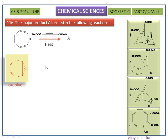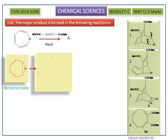This diene reacts with dimethyl butynedioate. It will give a [4+2] Diels-Alder adduct under thermal conditions. This is the benzene oxide diene.